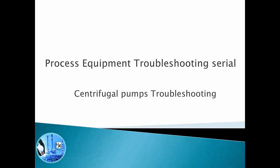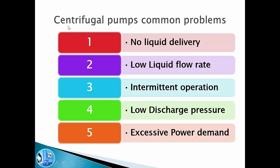Welcome everyone. In this process equipment troubleshooting series, today I will talk about centrifugal pump troubleshooting. Usually in the industry there are five major common problems for centrifugal pumps: the pump is not giving any liquid delivery, the pump is giving low liquid flow rate, the pump is having intermittent operation, the pump is giving low discharge pressure, or there is excessive power demand.